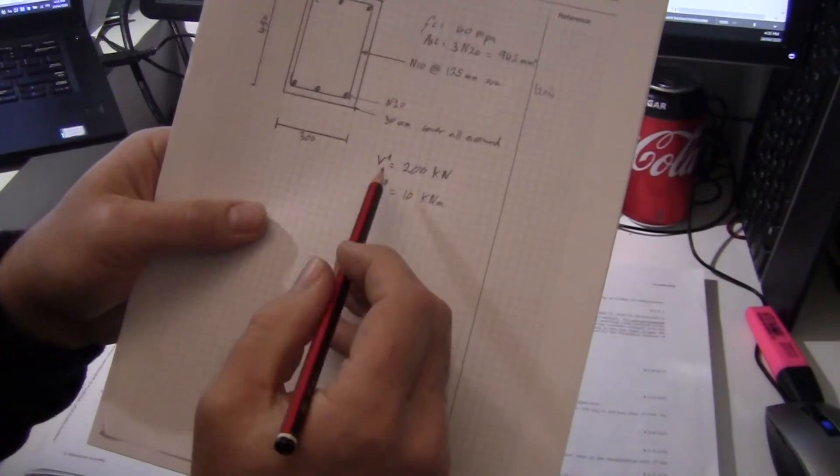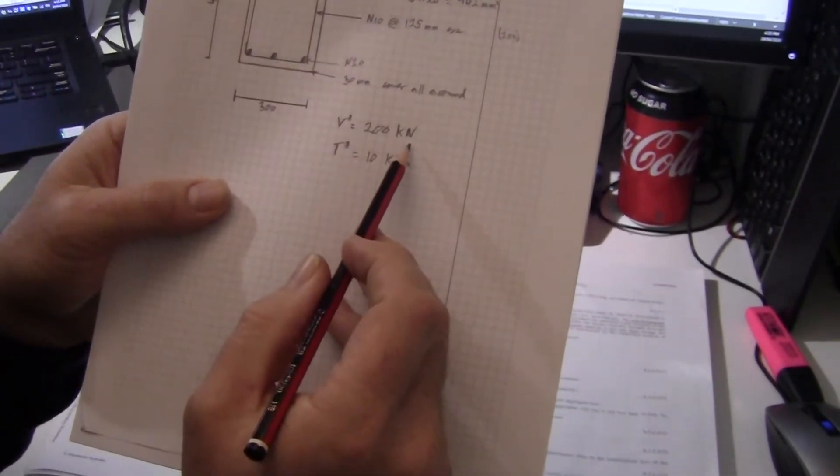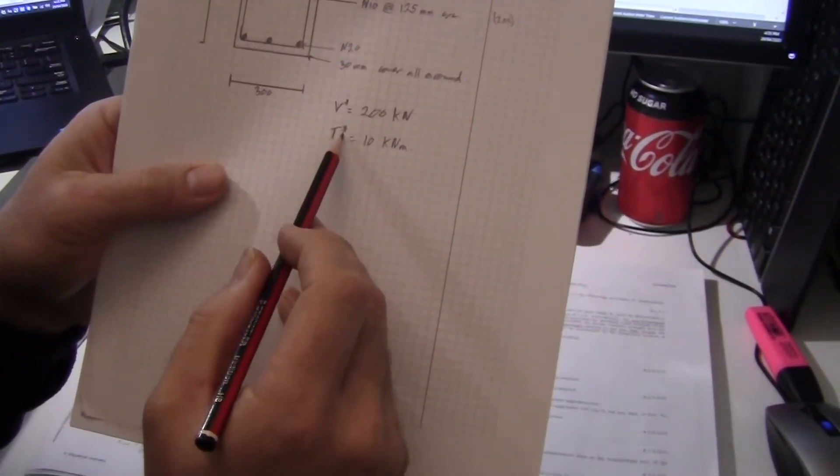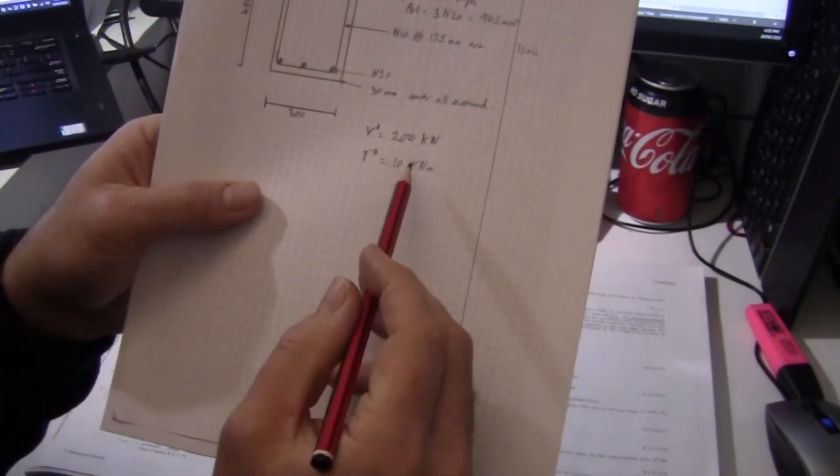And the load on our beam section is 200 kilonewtons of shear, 10 kilonewtons meters of torsion.